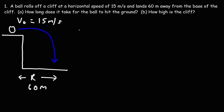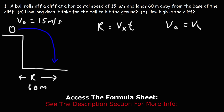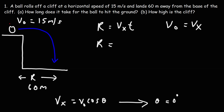It helps to know this formula: the range is equal to vx times t. For this particular trajectory, when the ball is moving horizontally, v_initial equals vx. Keep in mind vx equals v cosine theta, and for an object moving in the positive x direction the angle is zero. Cosine of zero degrees is one, so vx equals v_initial at zero degrees. At point A, vx is the same as v_initial: 15 meters per second.